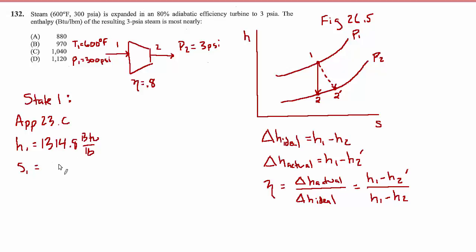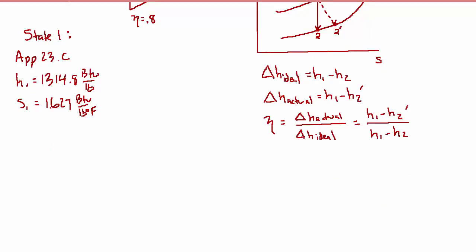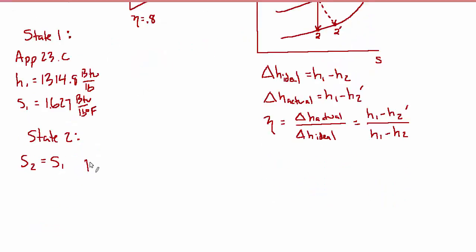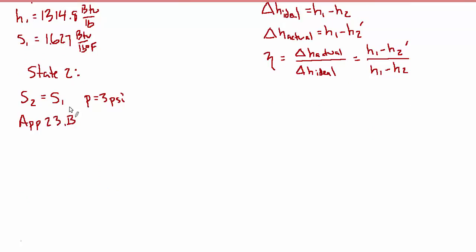As we analyze state 2, we make the assumption that it's isentropic as a first pass. If it's isentropic, then s2 equals s1, and we know the pressure at state 2 is 3 psi. Now we can go into appendix 23B, the steam table organized by pressure, and write down sf and sg from the line where P equals 3 psi. sf equals 0.2009 and sg equals 1.8858. The entropy at state 2, if it equals the entropy at state 1, is 1.627.